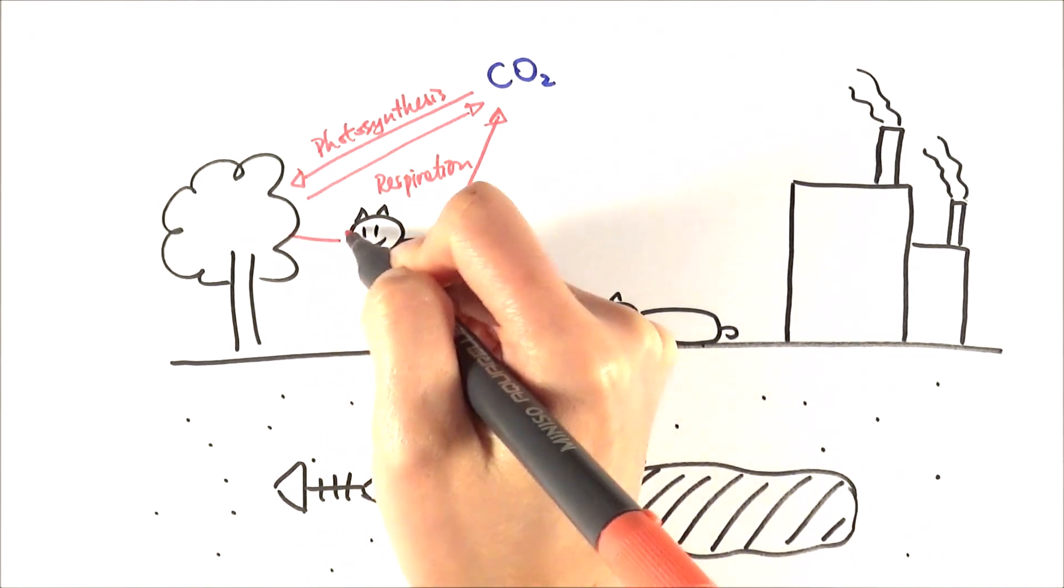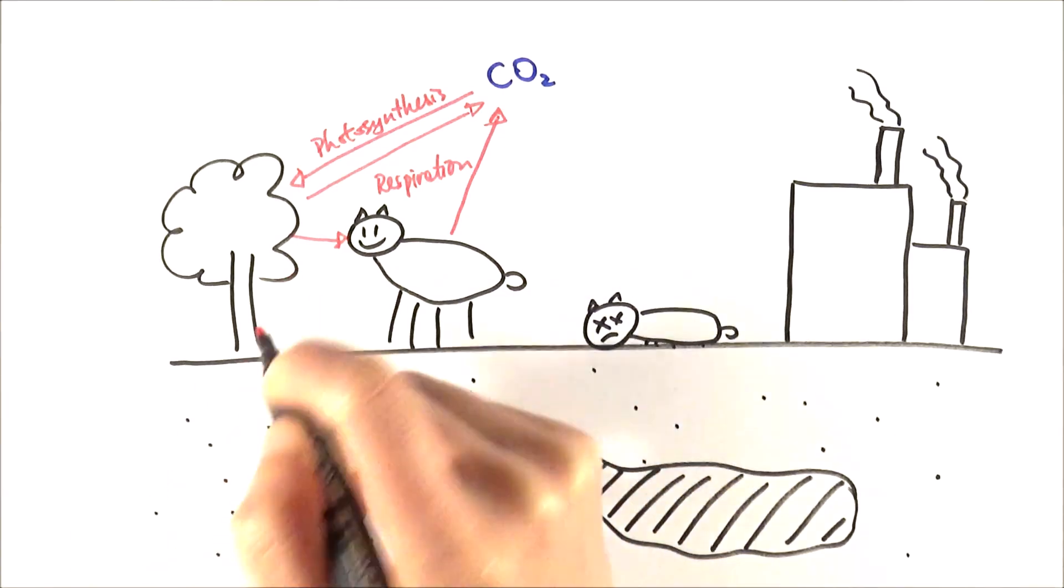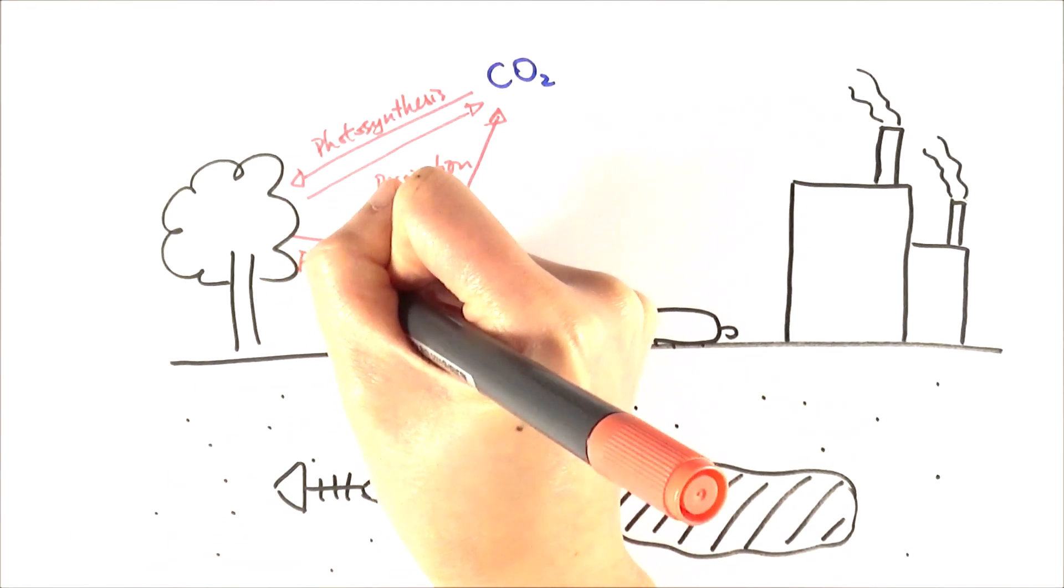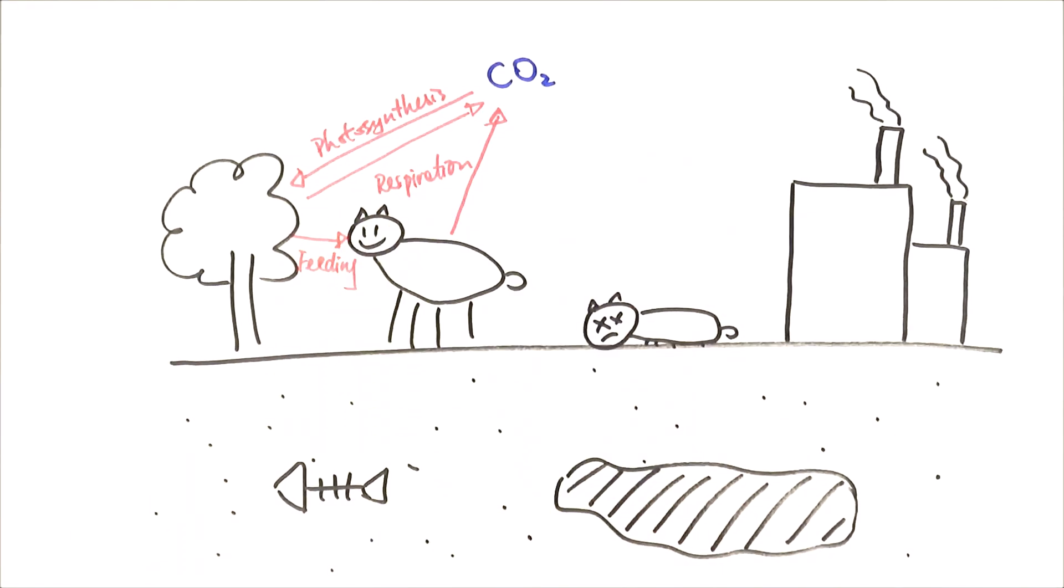Because the consumers actually eat part of the producers, feeding is one of the processes in which carbon can be transmitted as well.